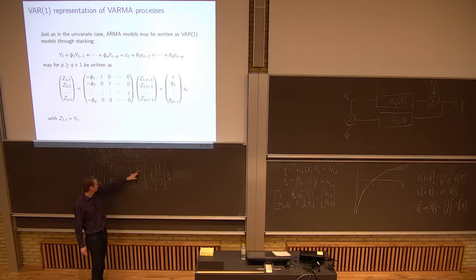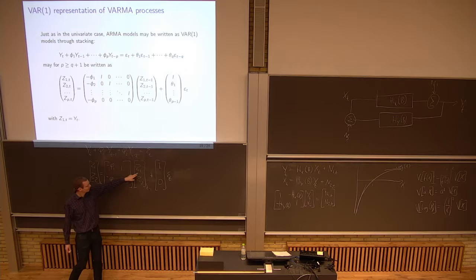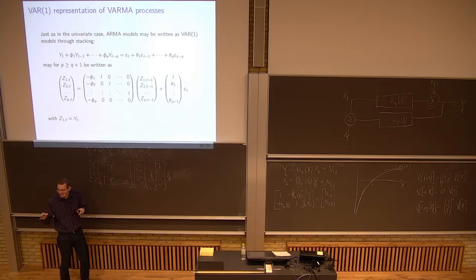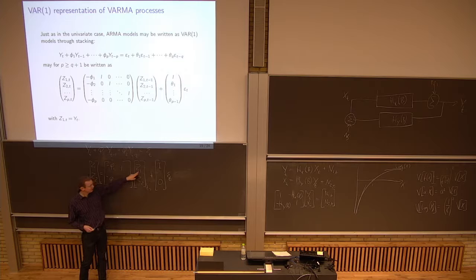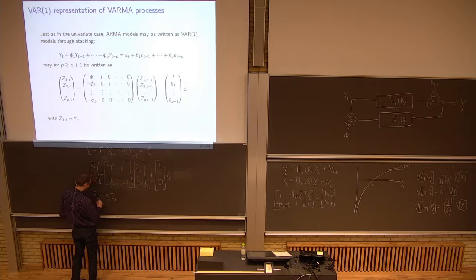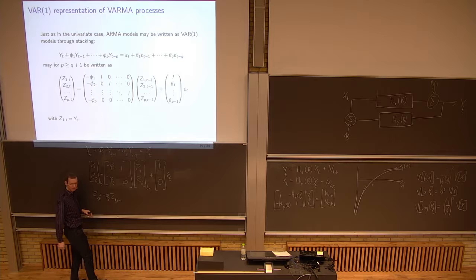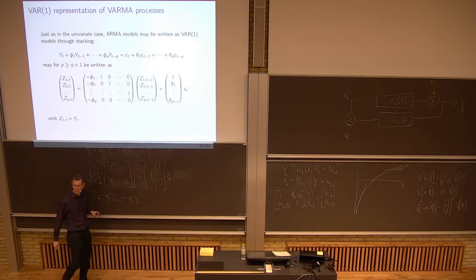So I need a two-dimensional system, moving to the right-hand side, minus phi_1 minus phi_2, and then I have to have a row of zeros at the bottom, and then an identity matrix, which in this case is just of dimension 1 here. And then I have it on my state, z_1, z_2, times t minus 1, plus in this case just the identity matrix and a zero on epsilon t.